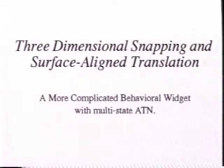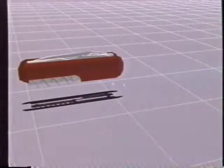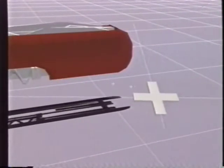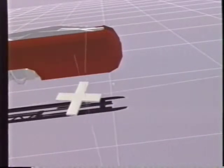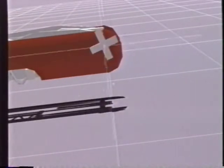Another type of behavioral widget allows an object to be manipulated in the space of a second object. Here we snap the cross logo to the surface of the knife. With the mouse we can pick a point on the surface of the cross. We then drag to the knife and the cross snaps to its surface.